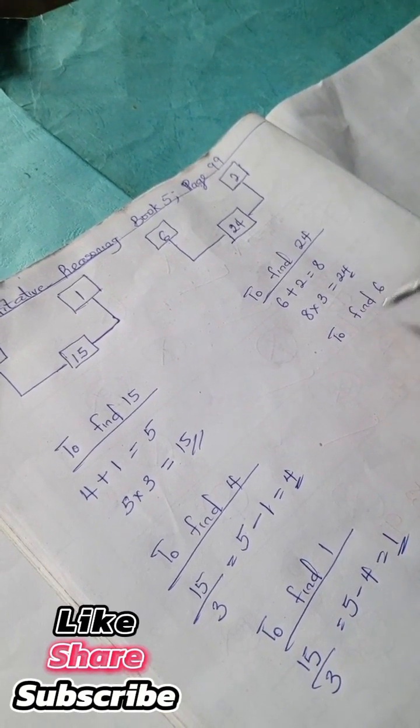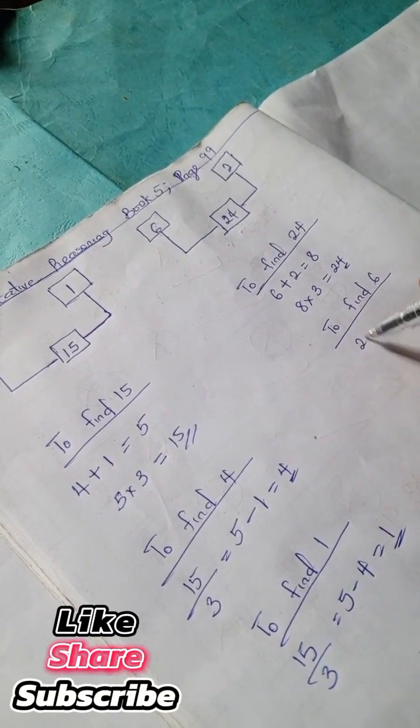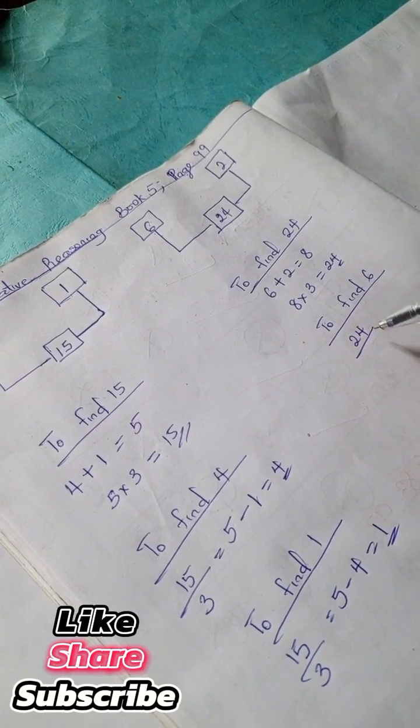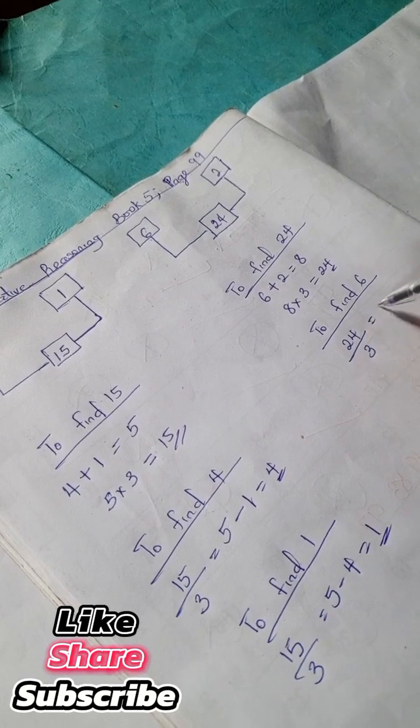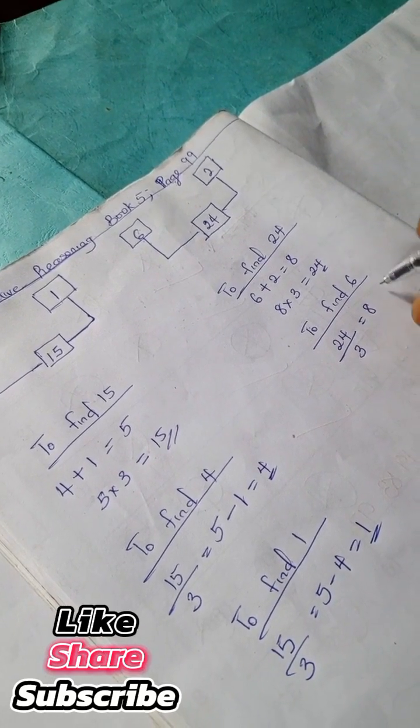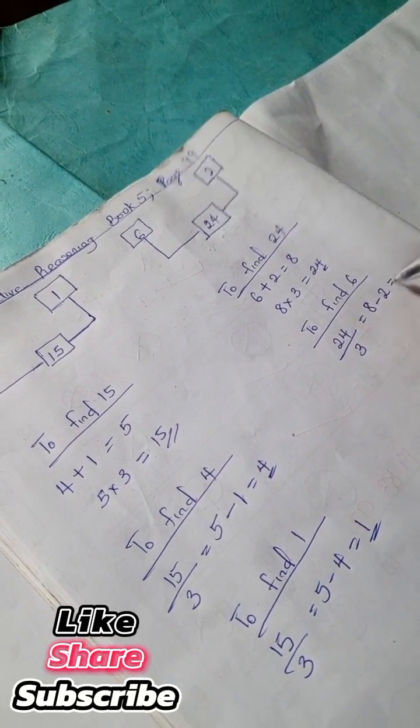To find 6, we're going to have 24 divided by our imaginary 3, which is 8. 8 minus 2 is 6.